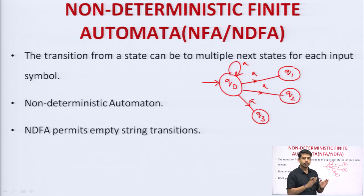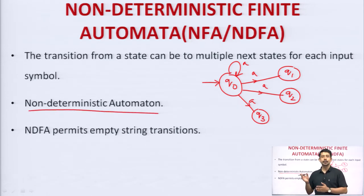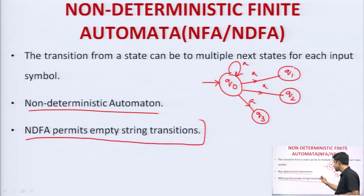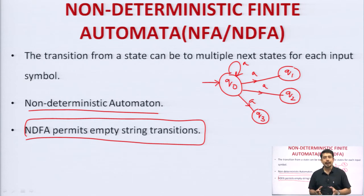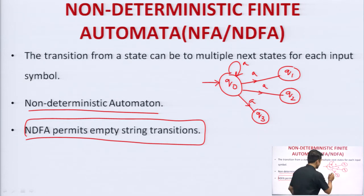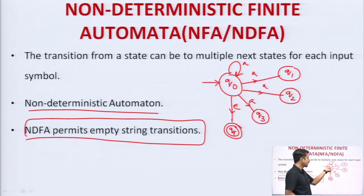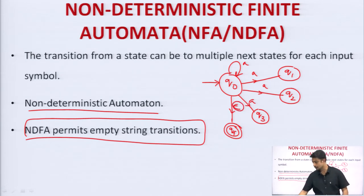Moving to the second point: it is not determined that there should be exactly one transition, so the name comes — non-deterministic automaton. Also, NDFA permits empty string transitions. Since there is no restriction, NFA can have empty transitions as well. Suppose I have one more state QF and I can have an empty transition. This means there is no string between Q0 and QF, but there can be a string of length zero, which is known as empty.